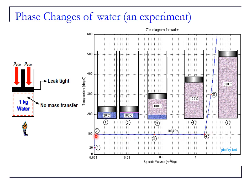From point 2 to 3 to 4, although temperature stays at 100°C, the volume increases significantly because steam density is much lower than liquid density. At the midpoint 3 we have a mixture of water and steam. At point 4, all the water has evaporated into steam — no liquid remains — and we give this the special name saturated vapor.